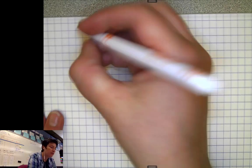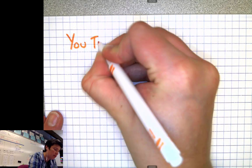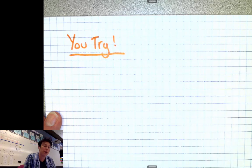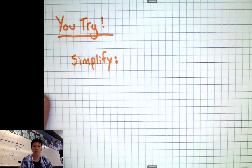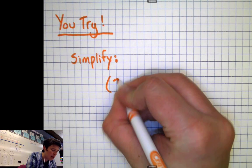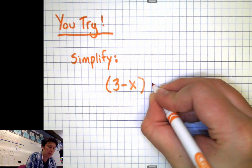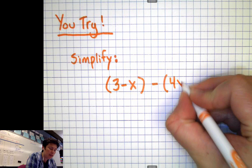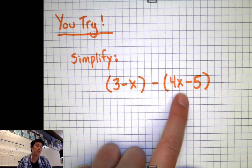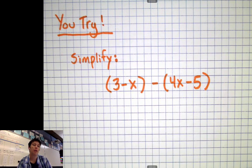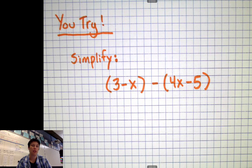We'll do a you try problem. And for your you try, here's what you're going to do. Your you try is, of course, simplify. And you're going to simplify parentheses 3 minus x minus parentheses 4x minus 5. There is your problem. Parentheses 3 minus x, take away parentheses 4x minus 5. Right now, hit that pause button on your device and see if you can do this all on your own. Give it a shot to test yourself out and see if you're getting a handle on this. And then when you're ready, unpause the device and see if you got it. All right, go.